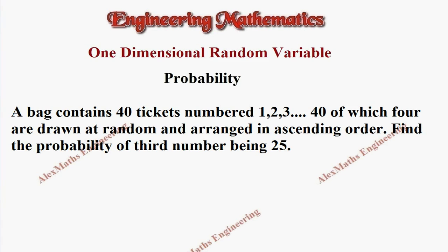Hi students, this is Alex. In this problem, we have a bag containing 40 tickets numbered 1, 2, 3 up to 40, of which four are drawn at random and arranged in ascending order. We have to find the probability of the third number being 25.